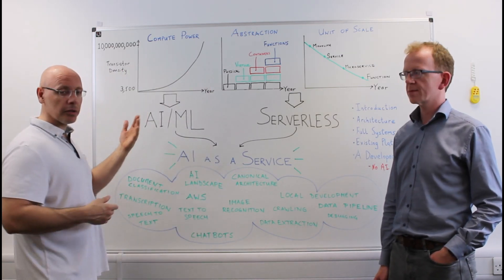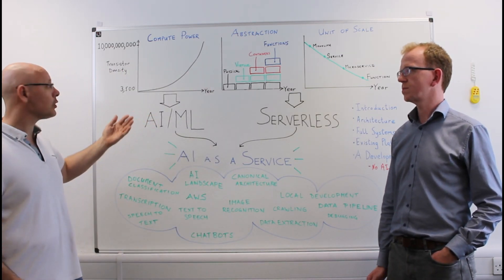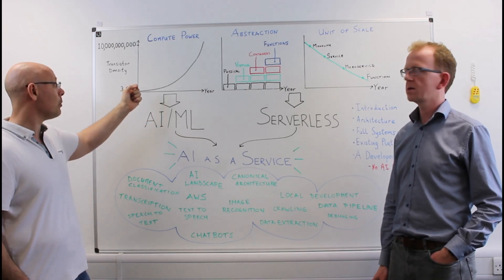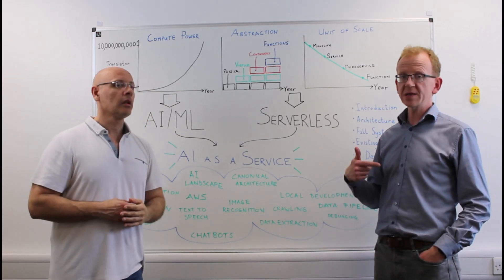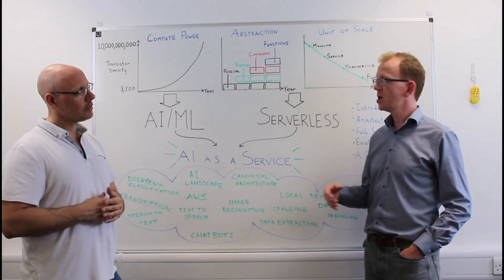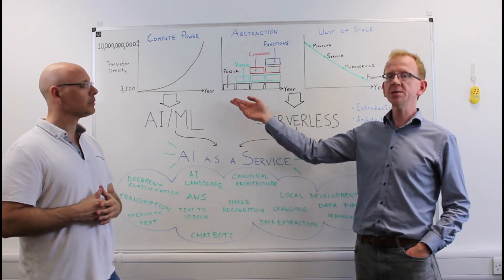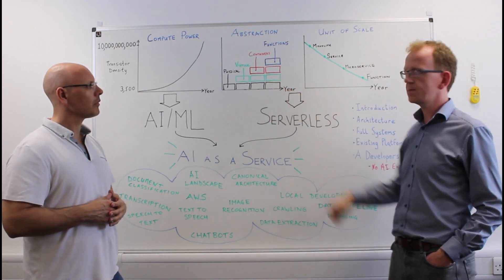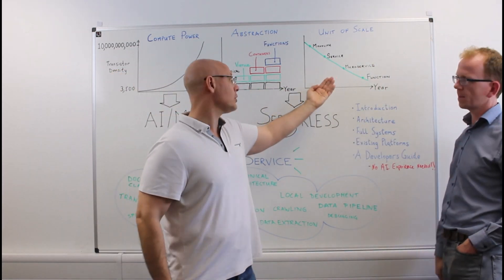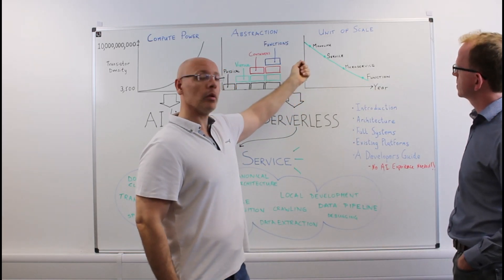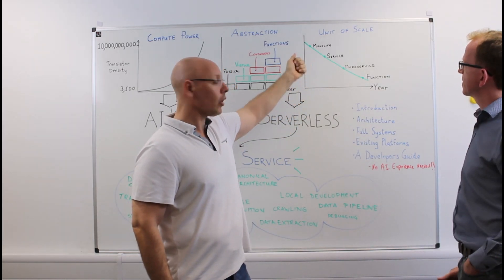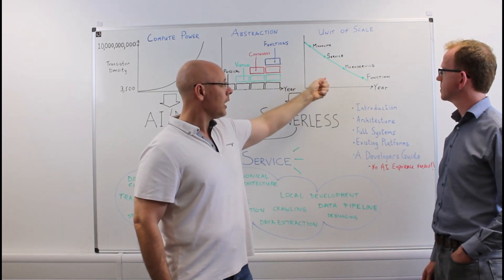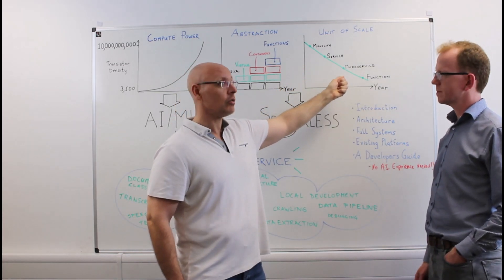If we step back and look at some of the trends in our industry over the last 20 to 30 years, one of the key trends is the exponential growth of compute power. At the same time, the levels of abstraction we're dealing with as developers has changed — we've gone from writing for physical machines to virtual machines, then containers, and now functions. And the unit of scale has changed too, dropping from millions of lines of code in monolithic systems through to services, microservices, and now functions.